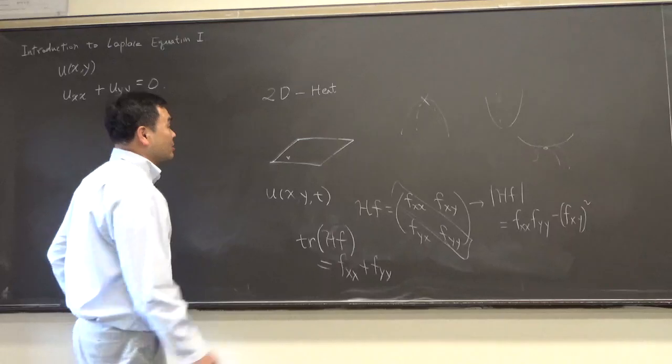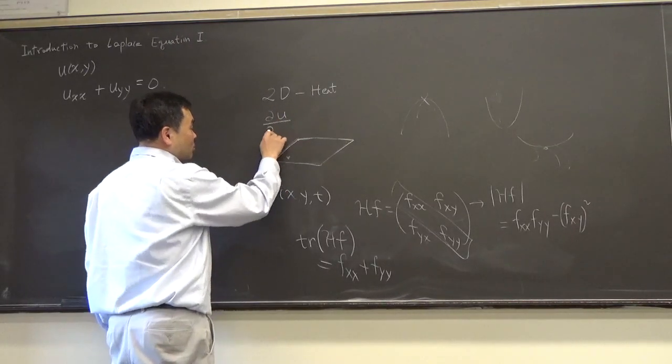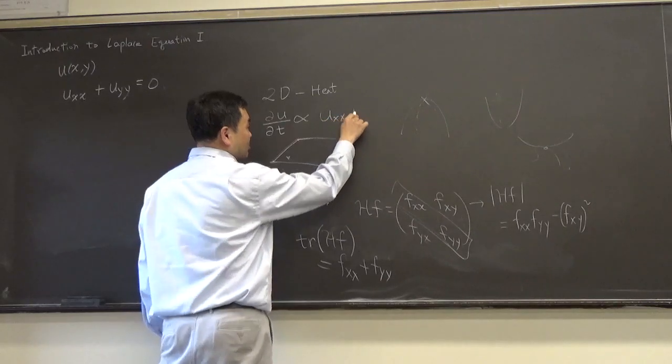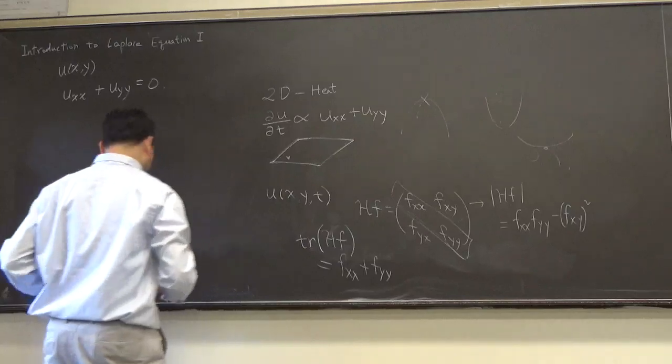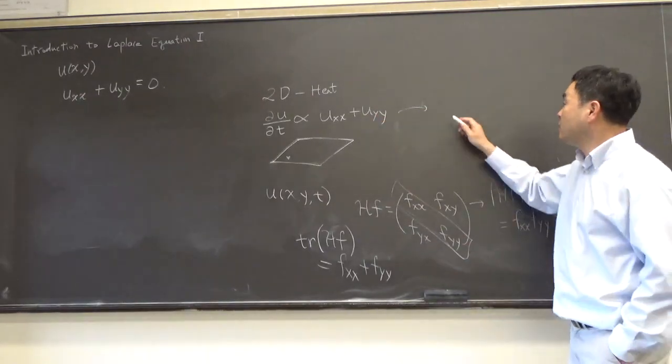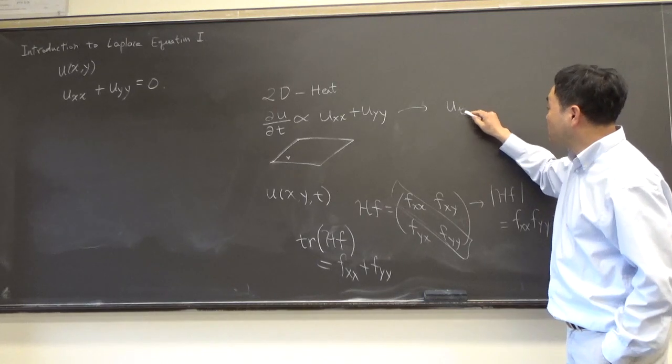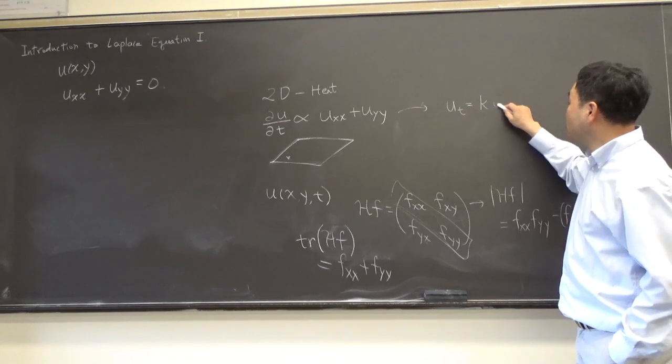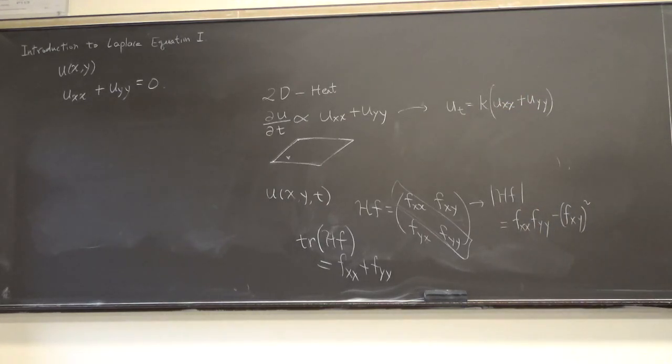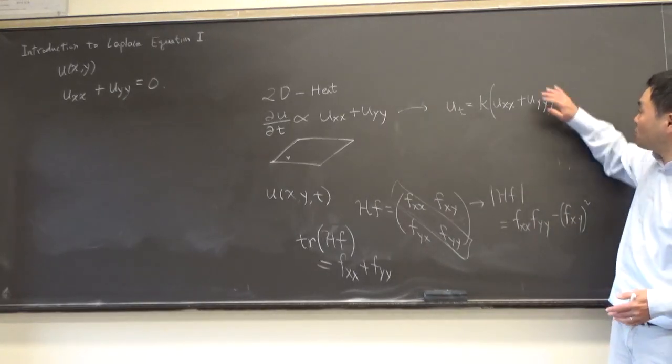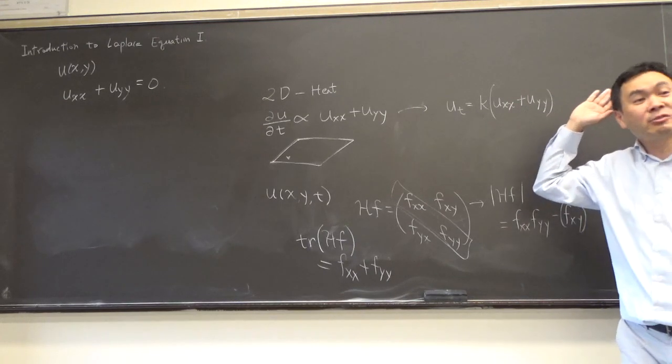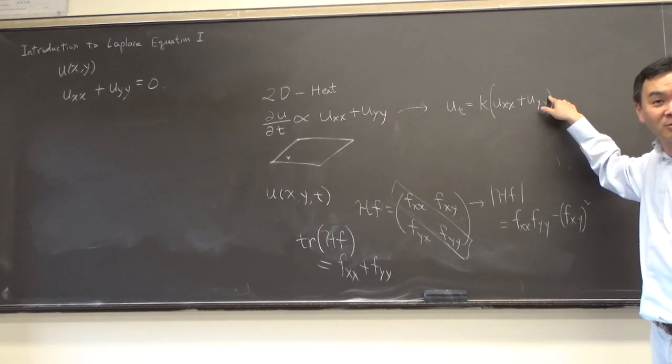So the two-dimensional heat equation goes like this. The rate of change of the heat with respect to time would be proportional to this concavity, so u_xx plus u_yy. So that if you turn that proportionality into the equation by using proportionality constant K, it will be u differentiated by t equals some constant times u_xx plus u_yy. And that's the two-dimensional heat equation. And it kind of makes sense because one-dimensional will be just this one. That's one-dimensional heat equation. The two-dimensional will be like that. And you can even guess what three-dimensional heat equation would be. u_zz would be added here. So that would be a three-dimensional heat equation.